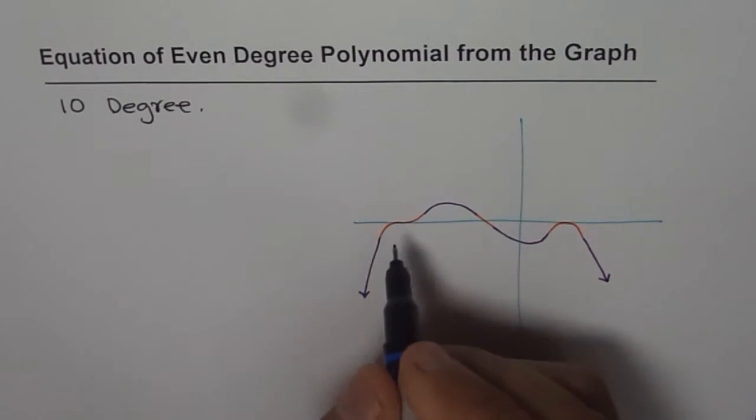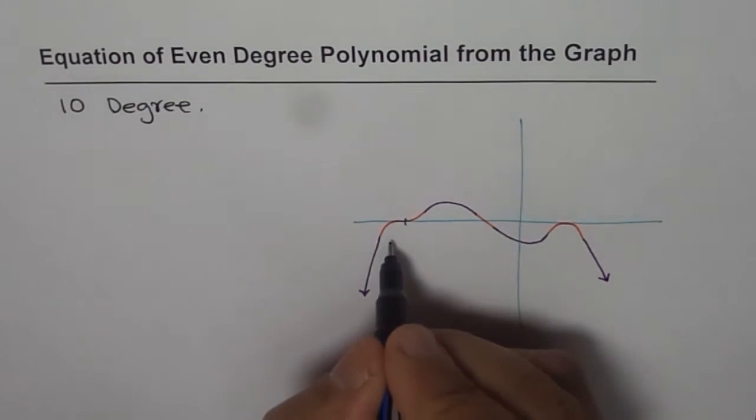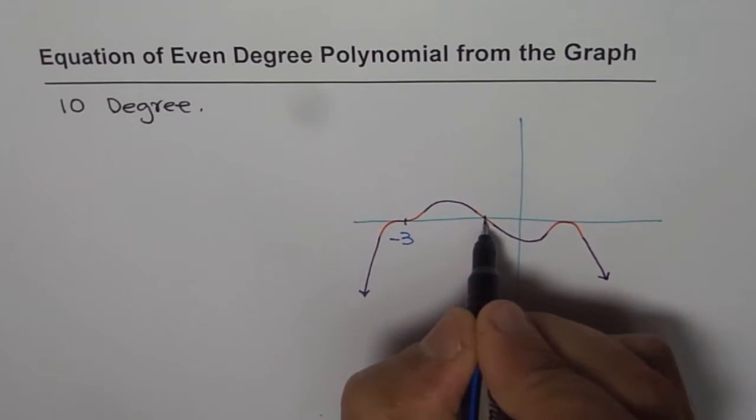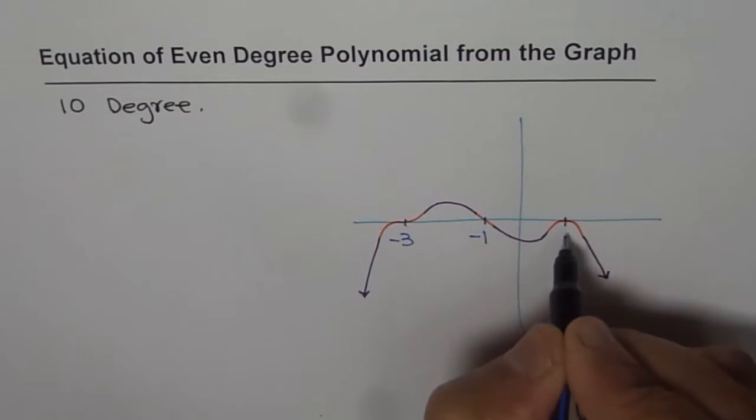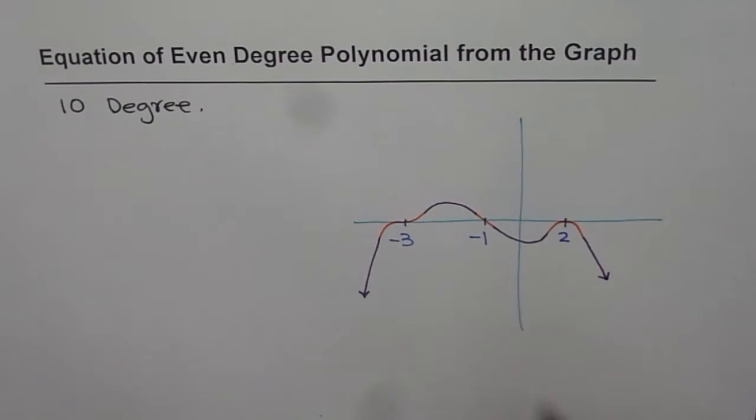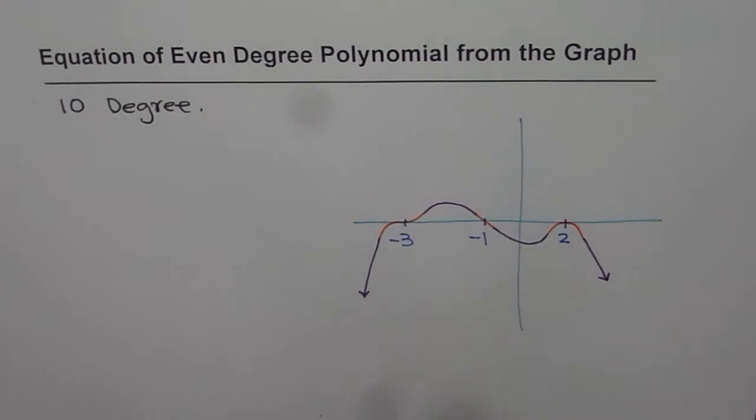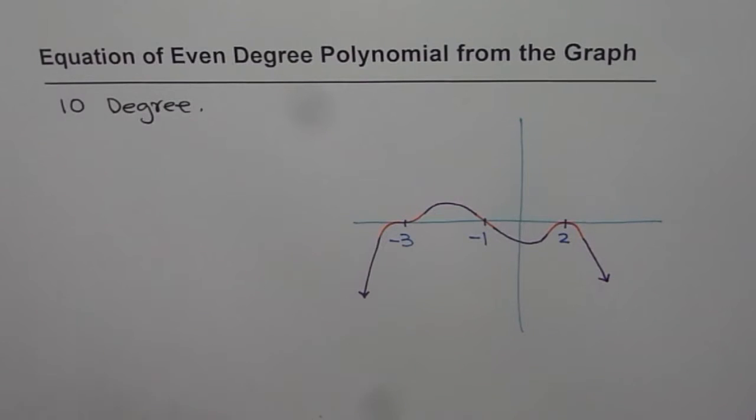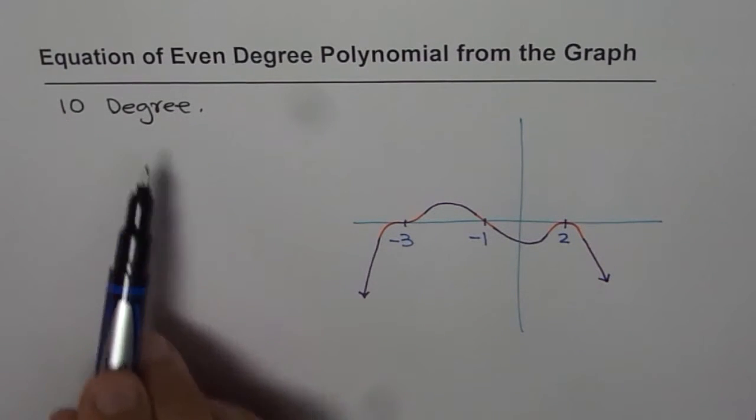Now let's take some values. We're just building up a question for ourselves. And let us say this value is, let's say, minus 3. In that case, I'll make this as minus 1 and I'll take this as 2. So these are my values. And at present, I'm not taking any value for the y-intercept. We'll take it later.